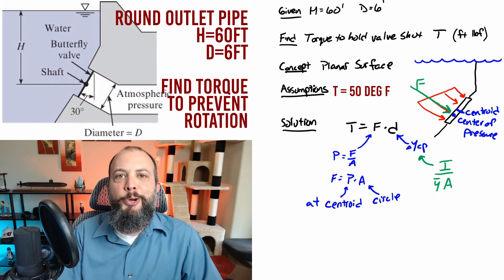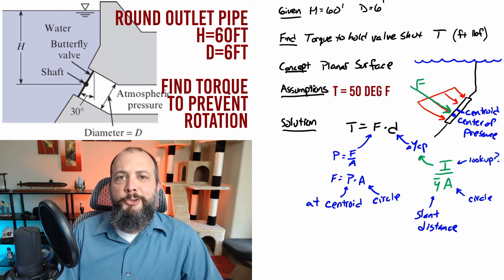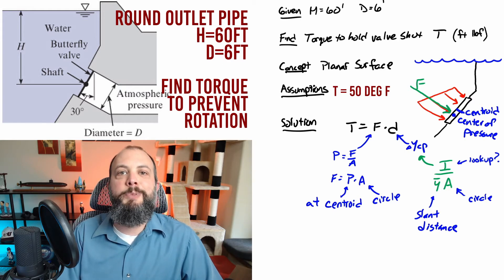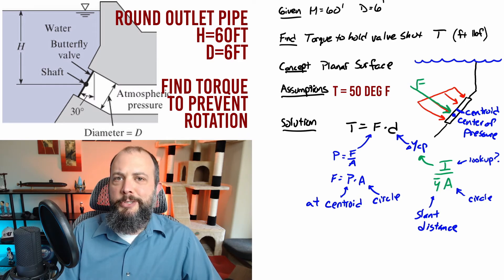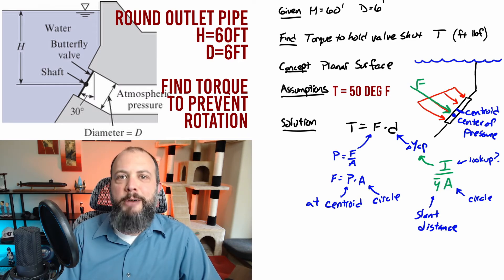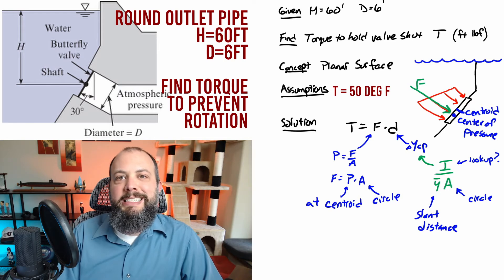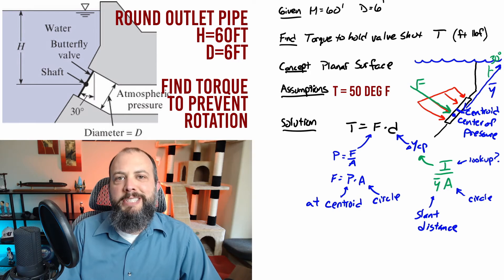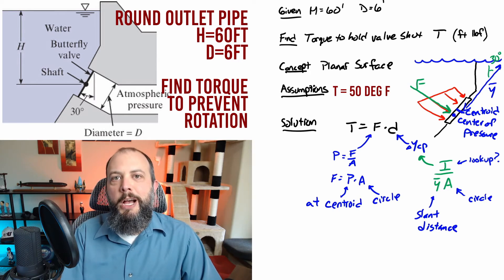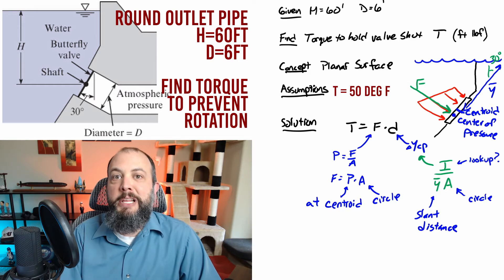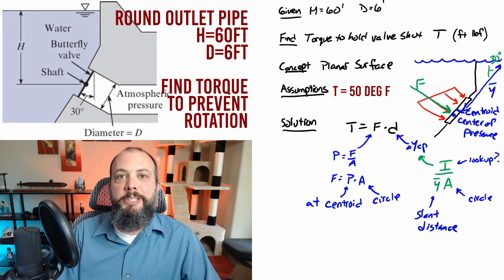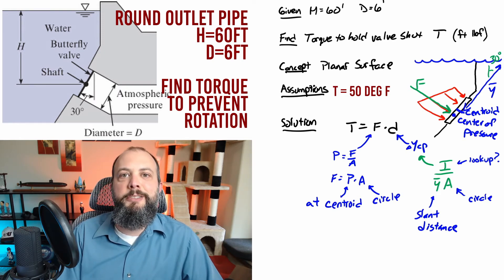To find this distance between the centroid and center of pressure, you use the moment of inertia divided by Y bar A. For a circle, that's not one that I usually have memorized, so I'm going to have to look that one up. That value Y bar is not the depth, it's actually the slant distance. Y bar is that slant distance along the same angle as the door up to the surface of the water, so it's going to be larger than the depth. We should be able to find all of these pieces.